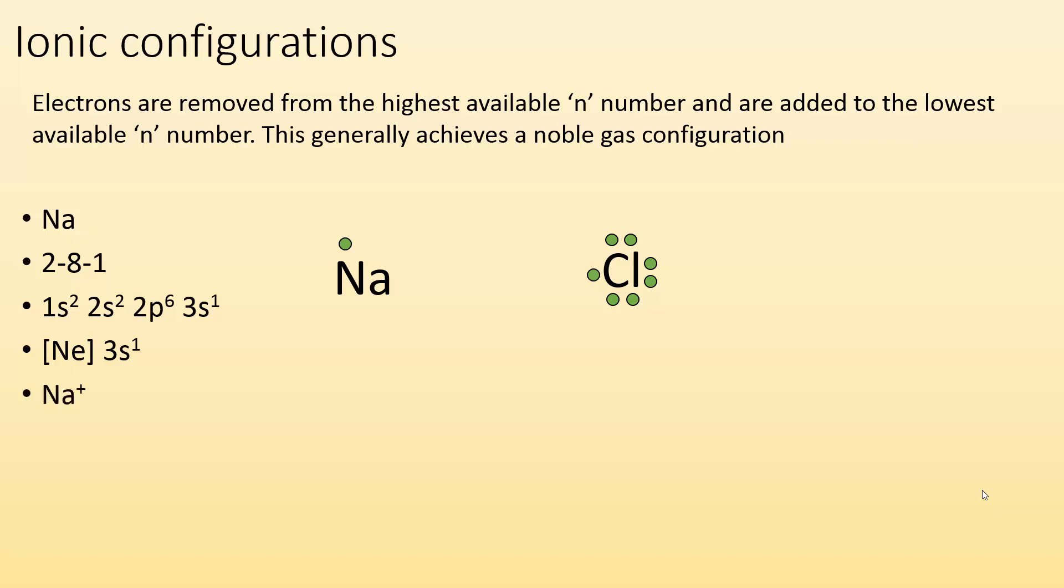Well, in order to become Na plus, sodium has to lose that electron and become positively charged. So what's going to happen in the configuration? Well, we're just getting rid of that 3s electron right there because that's the one we're going to lose. And we end up with a configuration that's the same as neon.